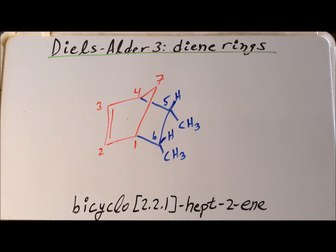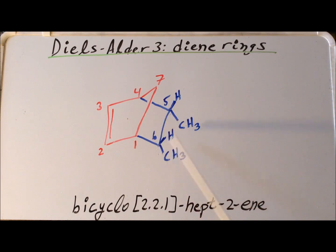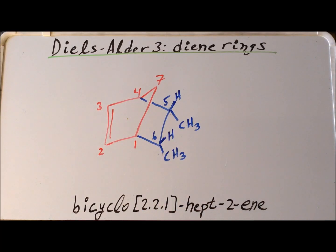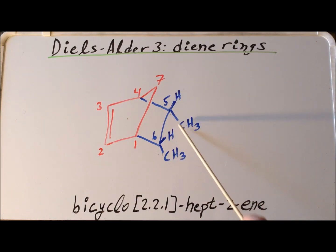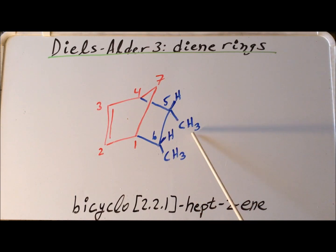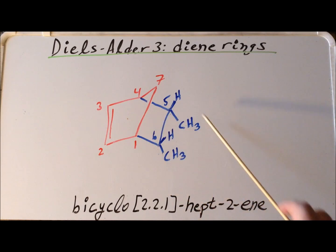Notice that if we have a cis-substituted 2-butene, we end up with both of the methyl substituents on the dienophile — the alkene part of it — both pointing down. The ring structure for the bicyclic system has hydrogens either up or down, so our substituents end up with the two hydrogens both pointing up and both of the methyl groups pointing down. So we notice that if we start with a cis-substitution, we end up with a cis-product.